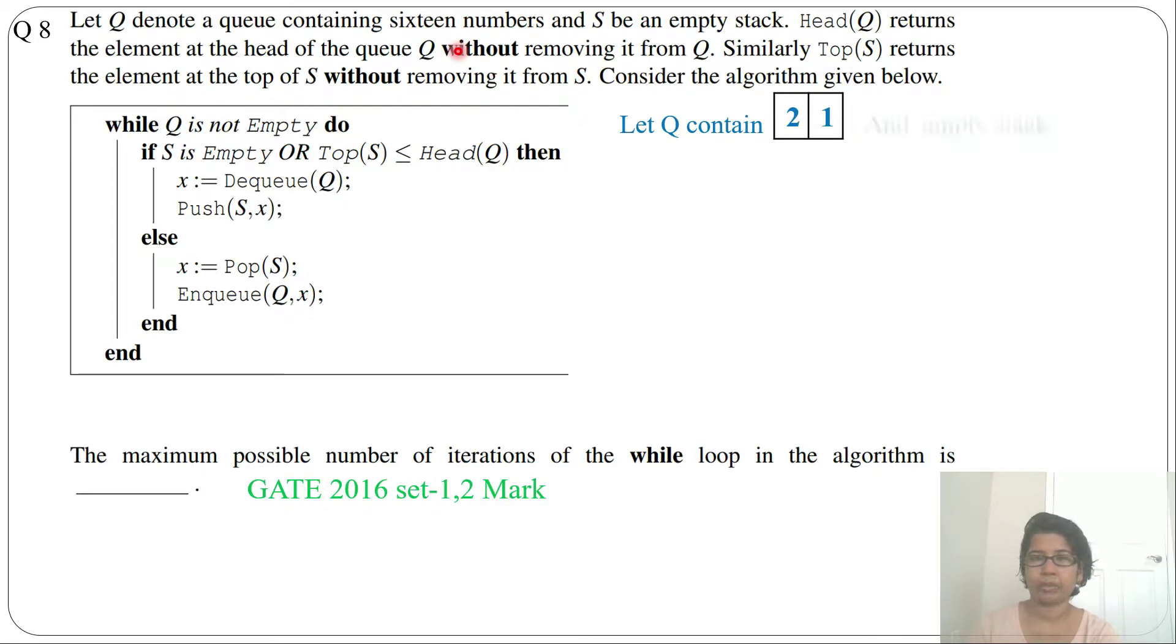Q contains 2 numbers and stack is empty as it is written. So here it is written Q contains 16 numbers and S be an empty stack, but for my example I am just considering Q contains 2 numbers. So let's run the algorithm and see how many times while loop will run. So while Q is not empty, there should be some value in Q. If Q is empty then the while loop will stop.